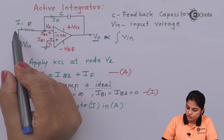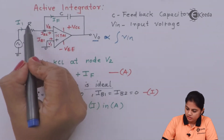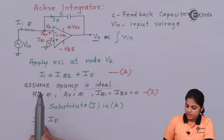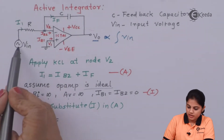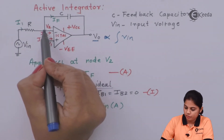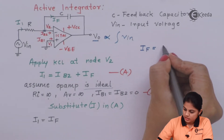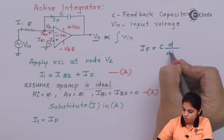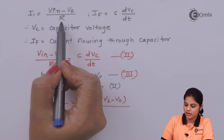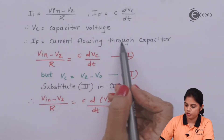Now let's write expressions for I1 and IF. I1 = (V-in minus V2) / R. IF is the current flowing through the capacitor, which can be written as IF = C × d(Vc)/dt, where Vc is the voltage across the capacitor. So we have: (V-in minus V2) / R = C × d(Vc)/dt.